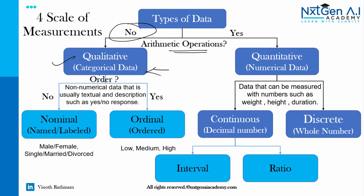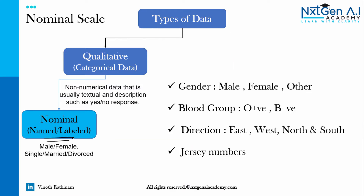Categorical data is further classified into nominal and ordinal data. Nominal data means named or labelled data. Examples include gender, blood group, direction, and jersey number. These are all cases where we can't do any comparison — just the name. We can't conclude that male is greater than female or east is better than north. It's just labelled or named data.